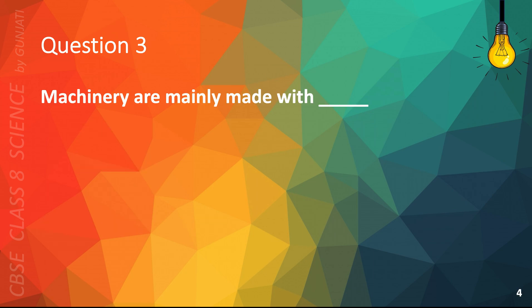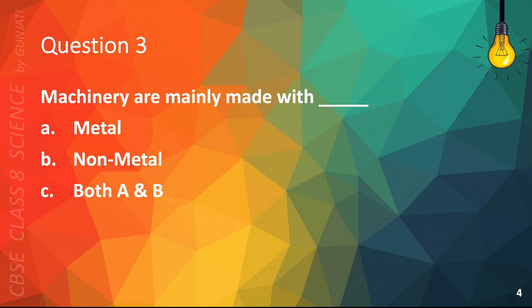Question 3. Machinery are mainly made with — A, metal; B, non-metal; C, both A and B; or D, none of the above. The correct answer is A, metal.